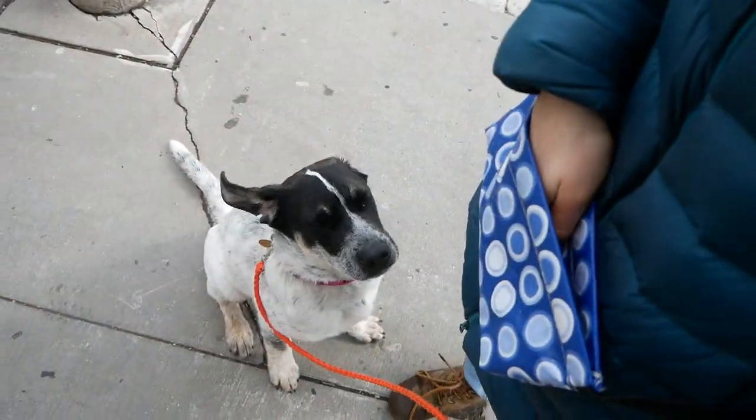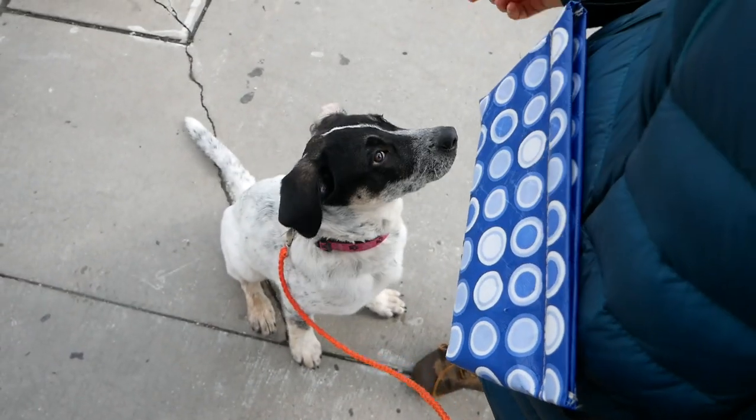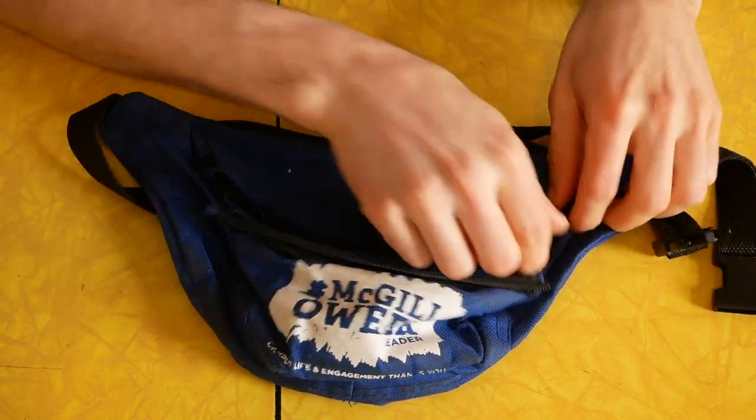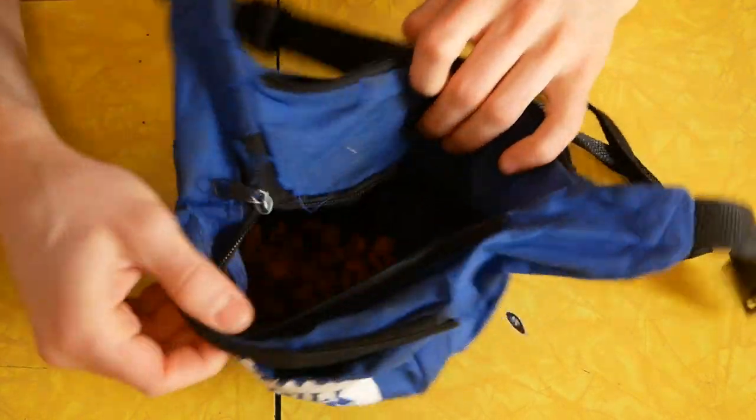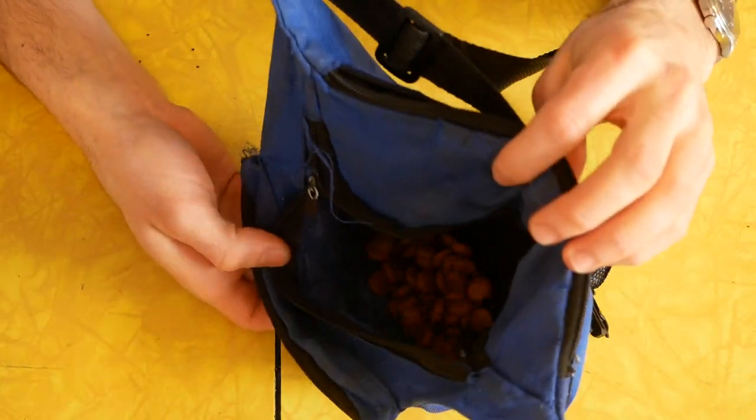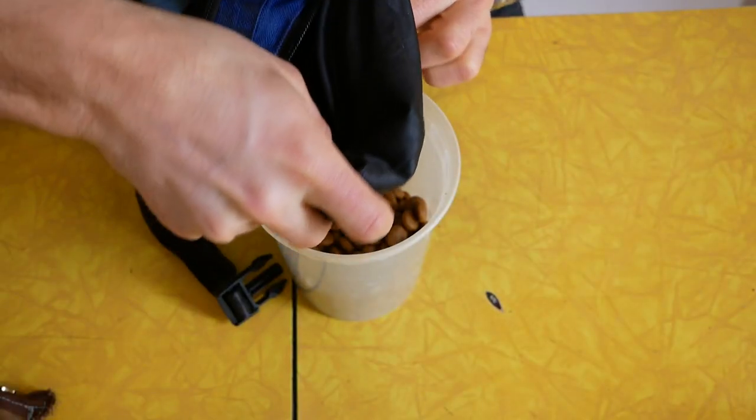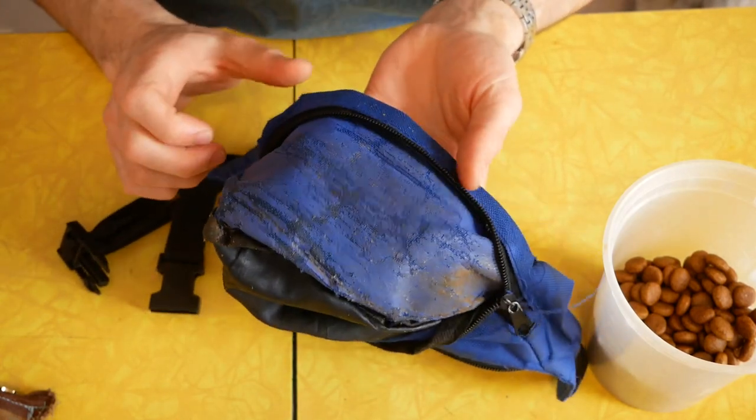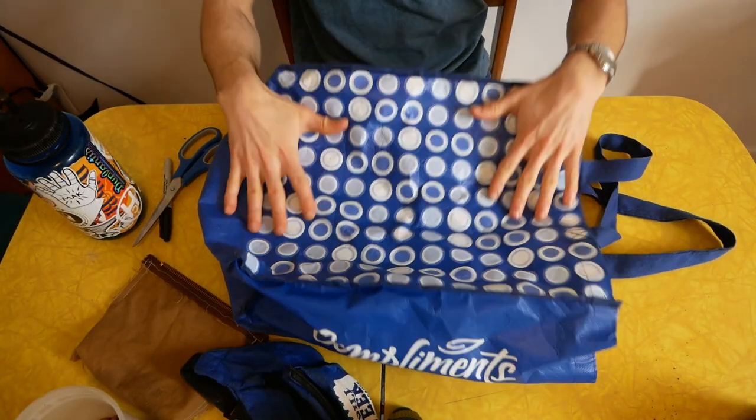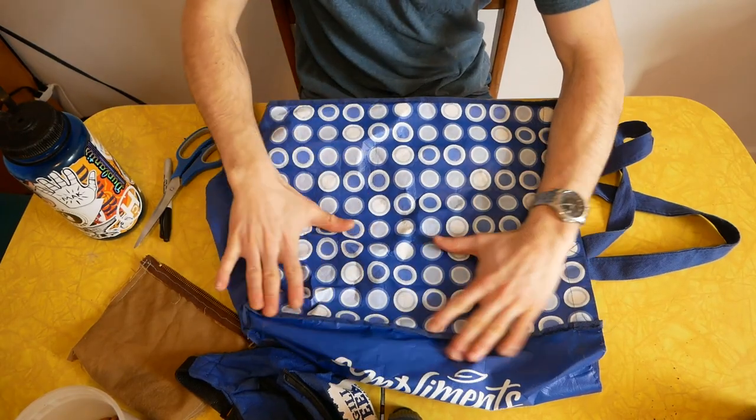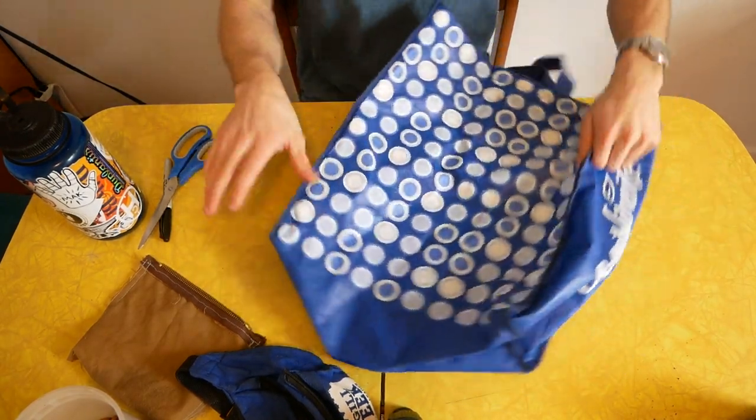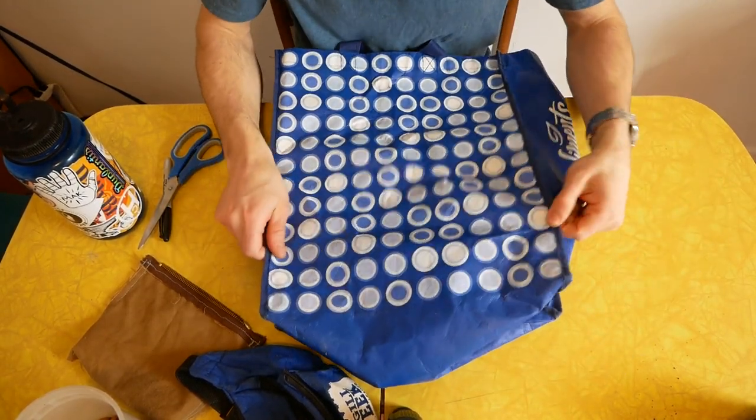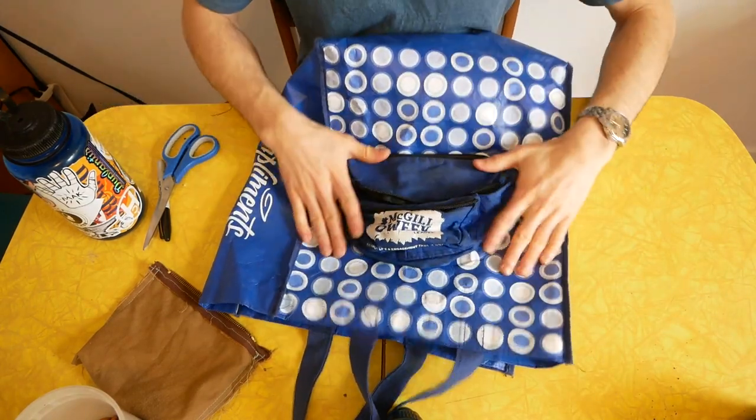Today we're going to turn a reusable shopping bag into a dog treat pouch. Let's get started. We've had our puppy, Abby, for about two months now and we've been using this old fanny pack as a treat pouch. As you can see it's pretty disgusting and it's falling apart, so I wanted to replace it with something that would be easier to clean as well as easier to reach in and grab some treats.